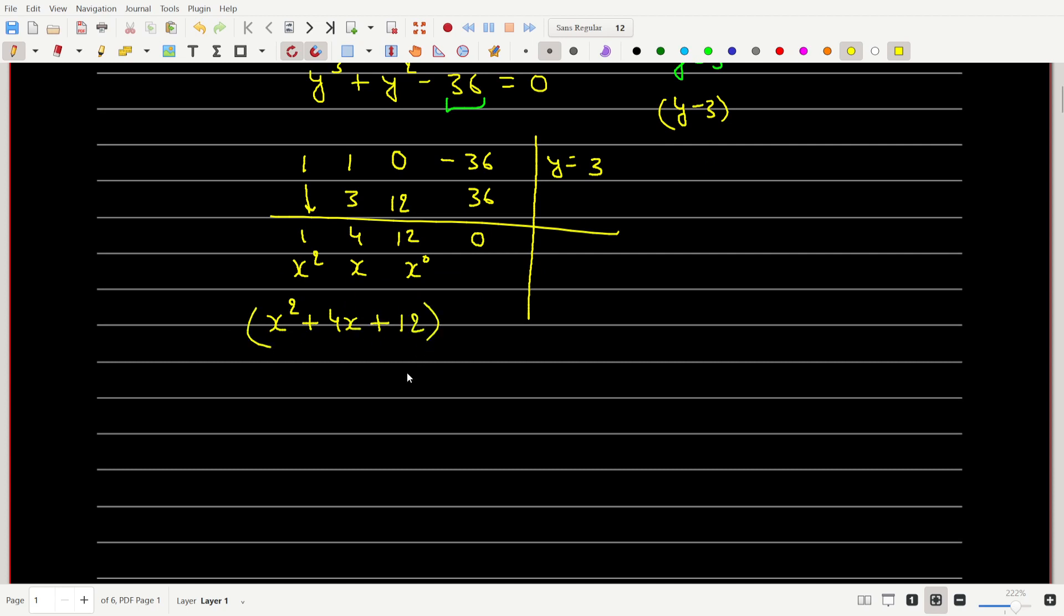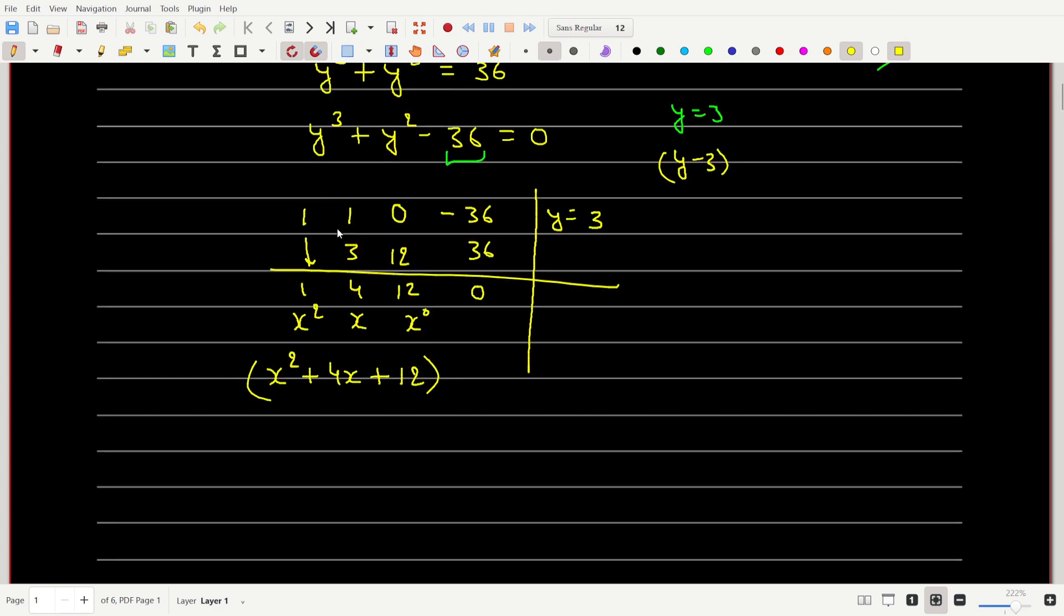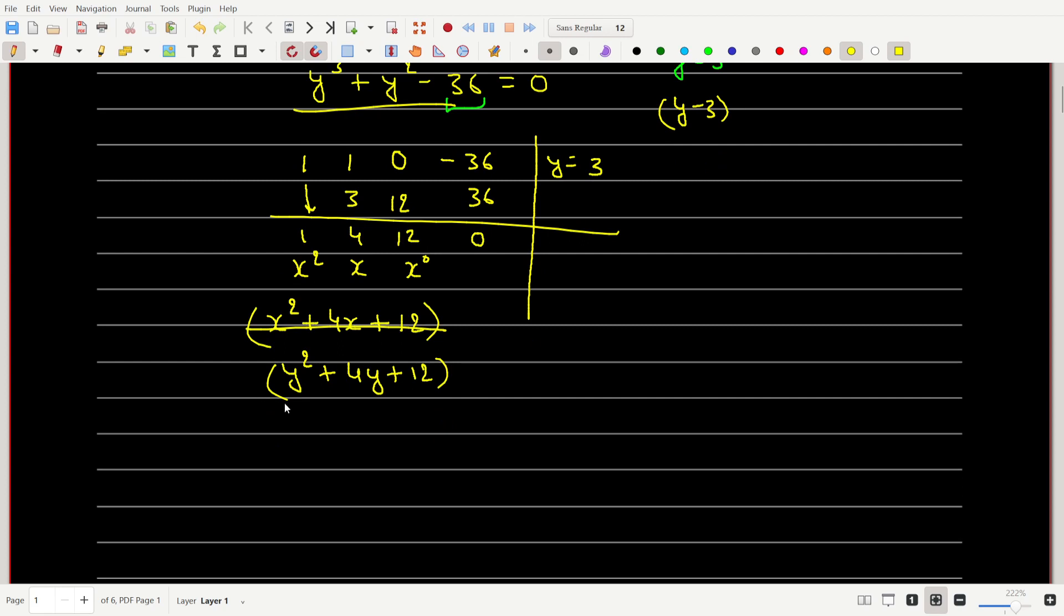So y square plus 4y plus 12 is a factor of this equation. So I can write y minus 3 times y square plus 4y plus 12 equals 0.